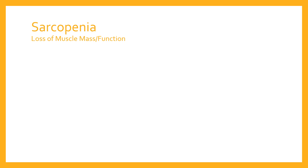Sarcopenia simply means the loss of muscle mass and therefore the loss of function associated with losing that muscle mass. The word 'sarco' you'll have come across before — in sarcomere, sarcoplasmic, and so on. Sarco means related to muscles; it comes from the Greek word for flesh. And 'penia' means a lack — so sarcopenia means lack of muscle.